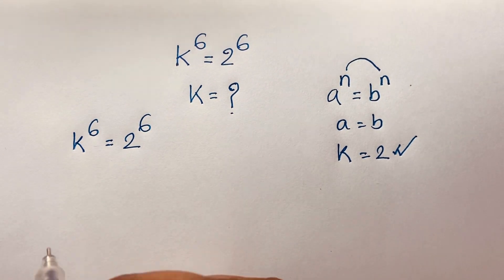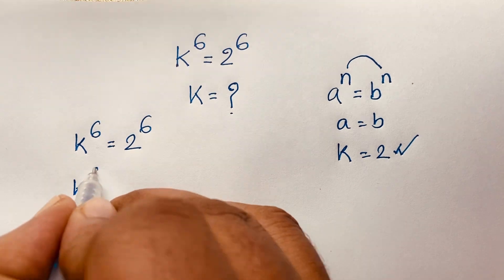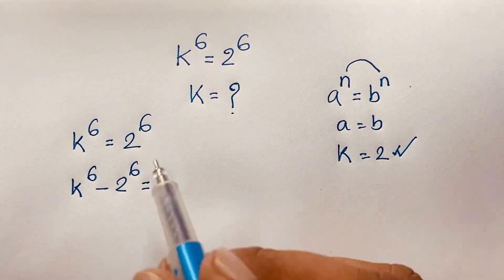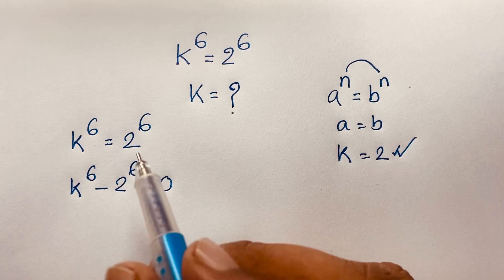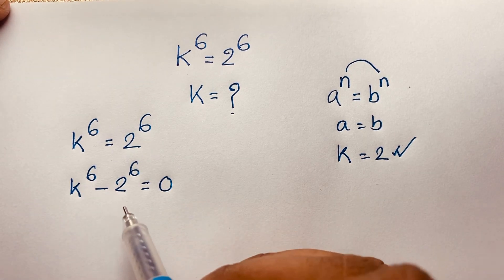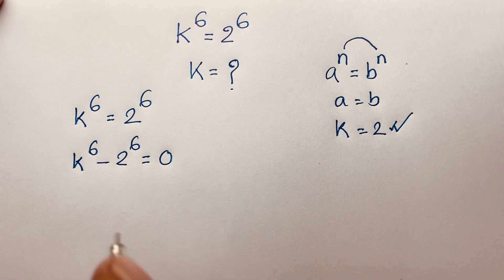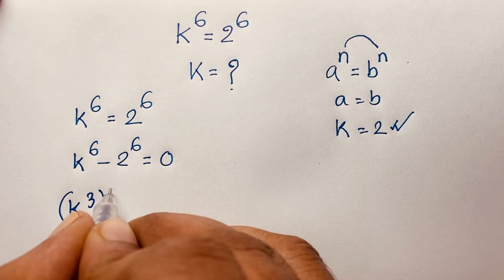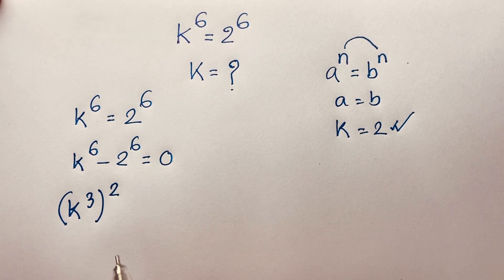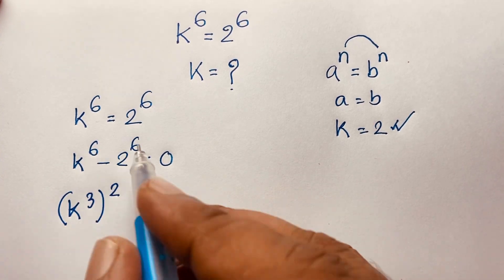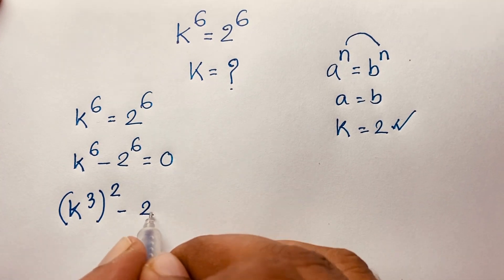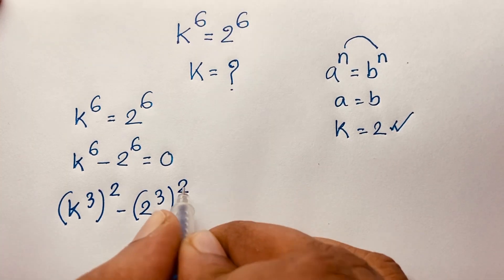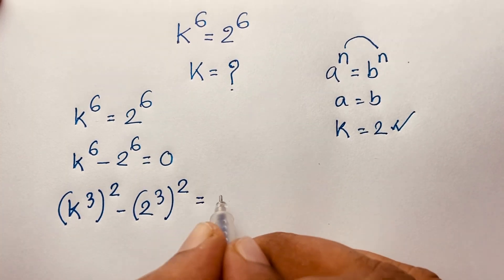Now, you can say that in this expression it will be k to the power 6 minus 2 to the power 6 is equal to 0 — I just moved this value to this side, so it becomes negative. Here, k to the power 3 in bracket to the power 2, and 2 to the power 3 in bracket to the power 2 — according to exponential law, 2 times 3 equals 6 — is equal to 0.